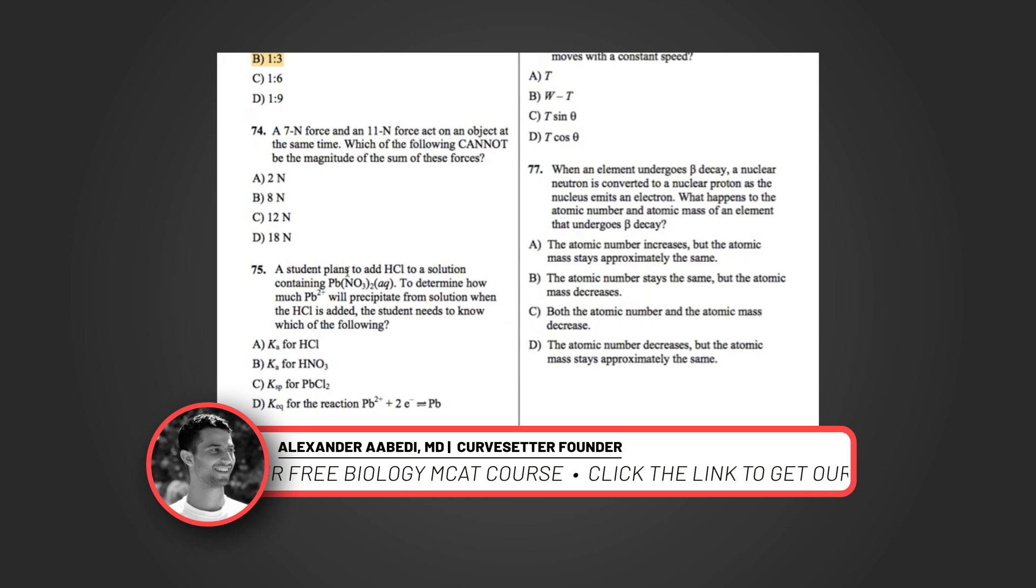Question 74: A 7 Newton force and an 11 Newton force act on an object at the same time. Which of the following cannot be the magnitude of the sum of these forces? If you have two forces acting on an object, there is a maximum and a minimum net force you can get. And you'll achieve these maximums when the force isn't angled, when they're being applied at the center of mass of an object, not at an angle to the center of mass.